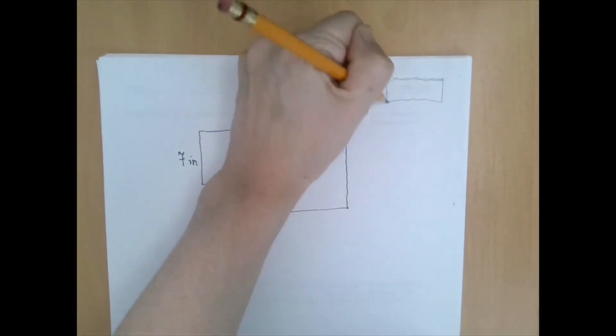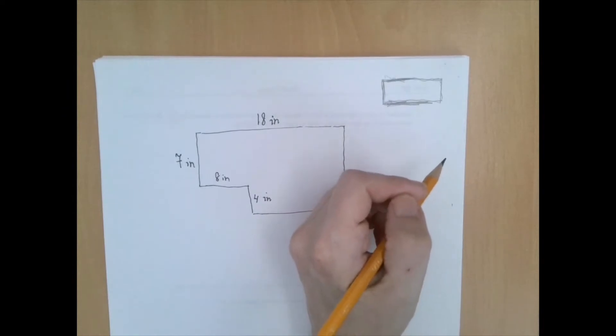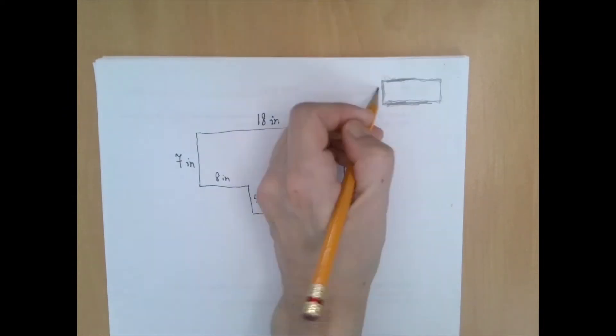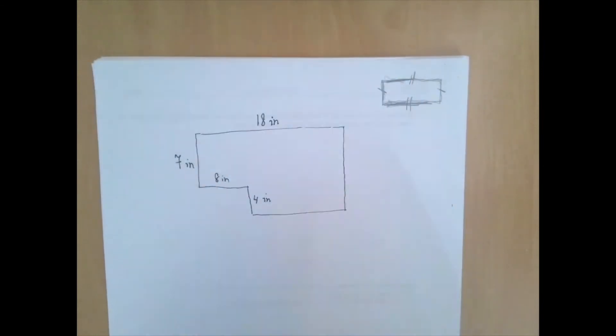This here is a rectangle. If we draw 2 right angles like this, these 2 lines are going to be parallel with each other and parallel lines preserve distances. Opposite sides of a rectangle are always equally long. That's what parallel lines do.